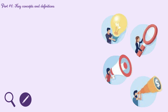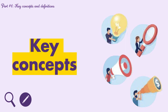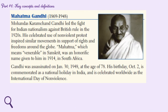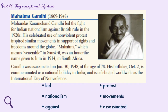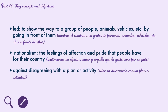Let's begin with the first part of the challenge: key concepts. Key concepts are words that we use to understand what the text is about. When we define the keywords, we can know what the text is about. The first key concept is 'lead,' which means to show the way to a group of people, animals, or vehicles by going in front of them. The second keyword is 'nationalism' — the feelings of affection and pride that people have for their country.